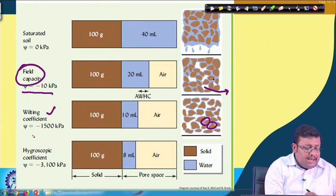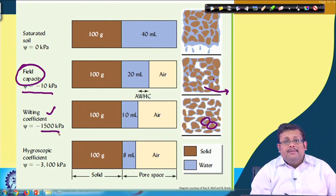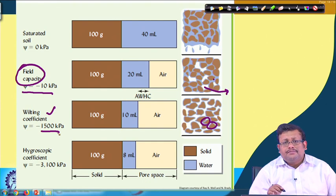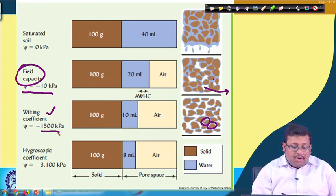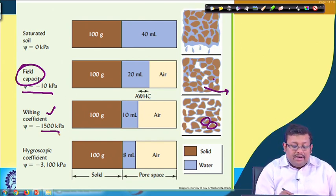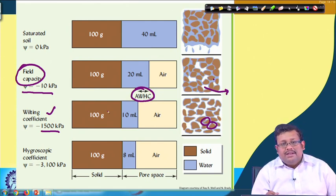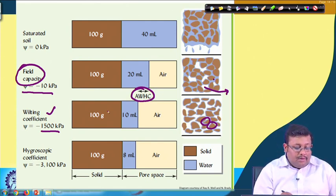Further drying the soil from field capacity causes water to continue decreasing until a very thin layer remains around the soil particles — we call this water content the permanent wilting coefficient (PWP). The potential at permanent wilting point is around −1500 kPa. We call it the permanent wilting point because at this point the plant wilts and cannot recover. Although water is still present in the soil, the plant cannot extract it. The water between field capacity and permanent wilting point is called available water or plant-available water holding capacity.